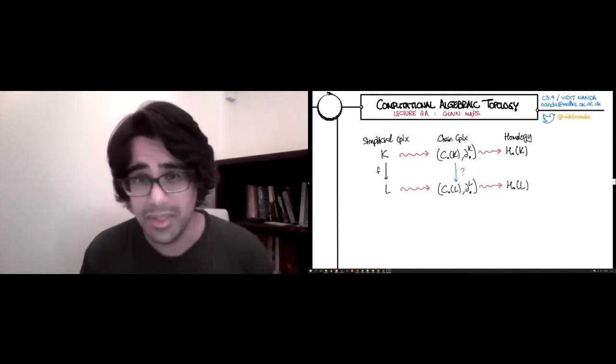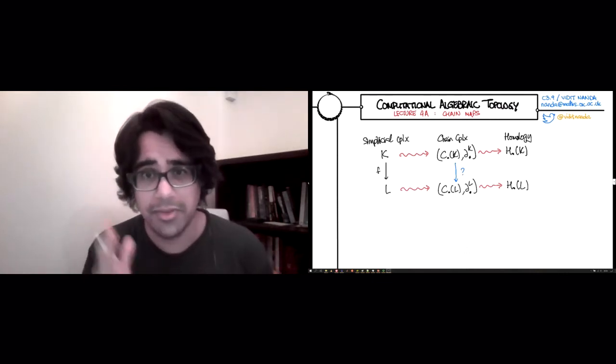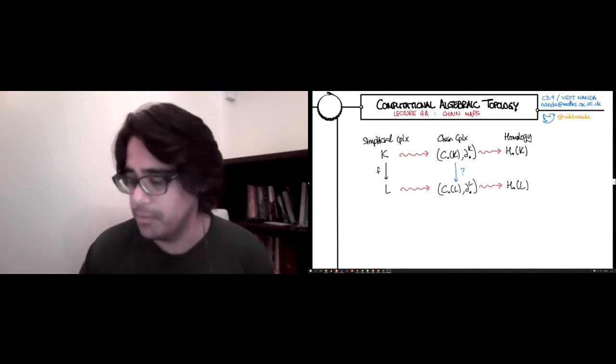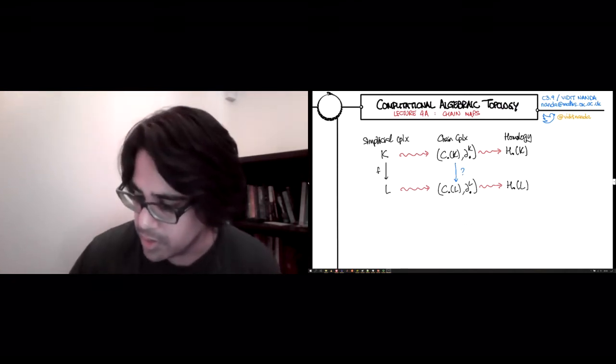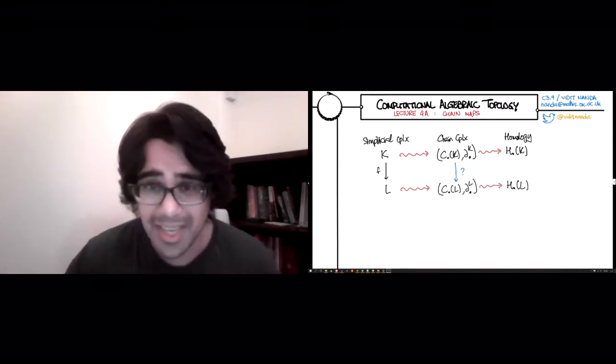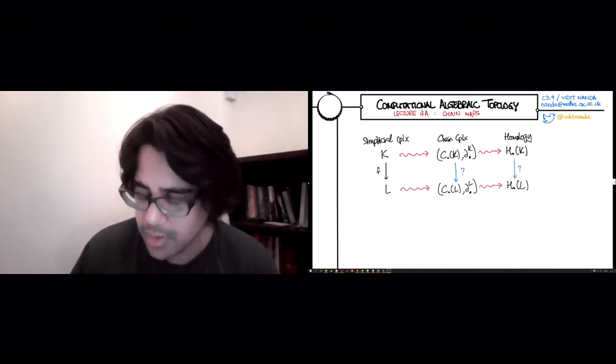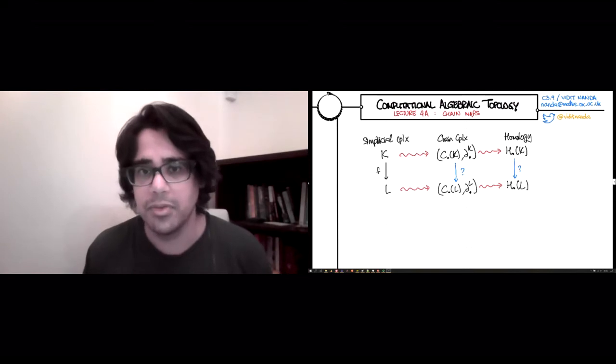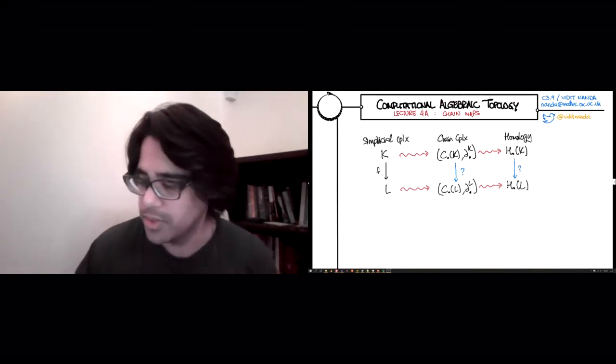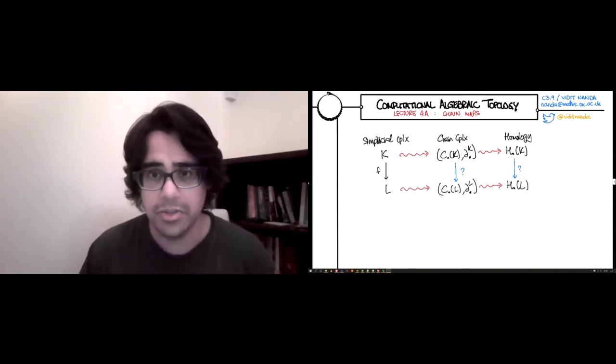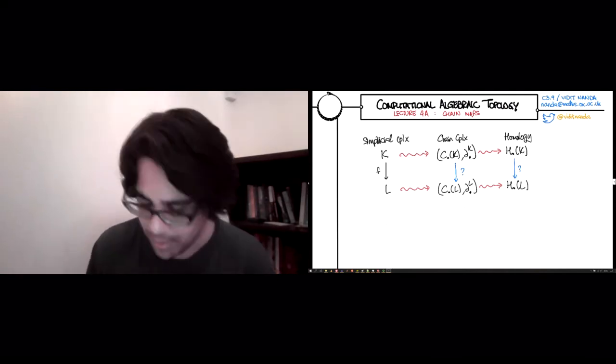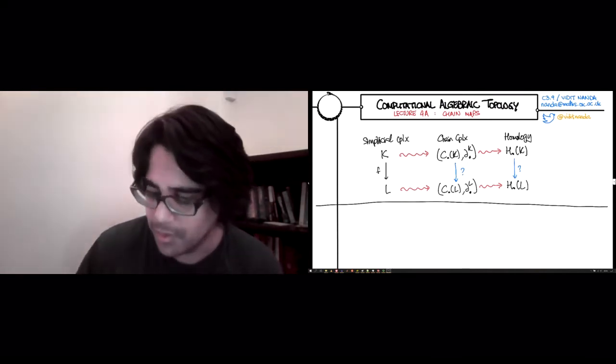Is there any reasonable way, using the data of f, to relate the two chain complexes? And the second question is, if you managed to successfully answer question one, is there any way to introduce or create maps between the associated homology groups? That's going to be the focus of the next two lectures. Figuring out what those two vertical blue arrows are is going to take much of the rest of our time.